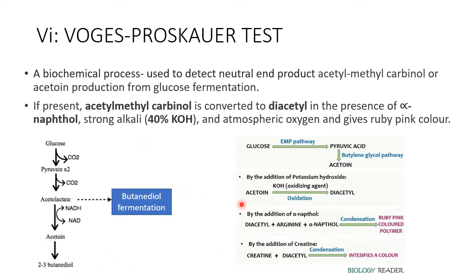The basic biochemistry is: glucose is converted via the EMP pathway to pyruvic acid, and then pyruvic acid is converted to acetylmethylcarbinol (acetoin) through the butylene glycol pathway, also called the butanediol pathway. When we add potassium hydroxide (40% KOH), the acetoin is oxidized and converted to diacetyl.